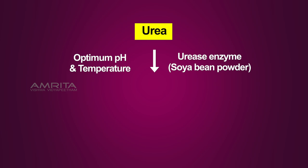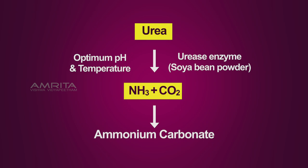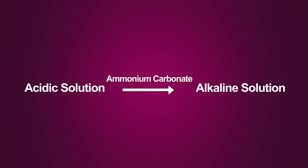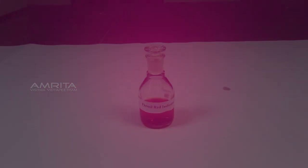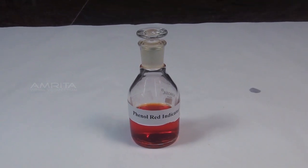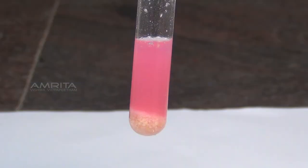Conclusion: At optimum pH and temperature, urease enzyme present in soya bean powder decomposes urea into ammonia and carbon dioxide, which form ammonium carbonate. Ammonium carbonate is an alkaline substance which changes the slightly acidic solution to an alkaline solution. Phenol red is used as an indicator in this reaction mixture, so the colour of the solution changes from yellow to pink.